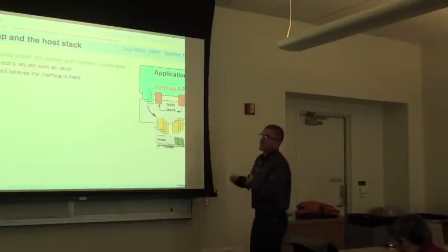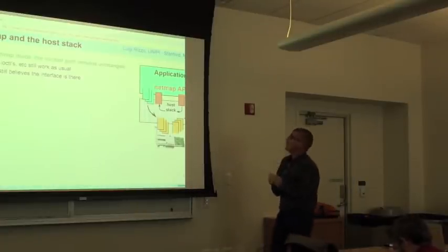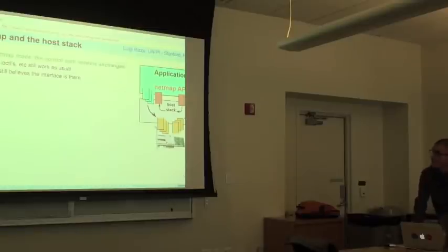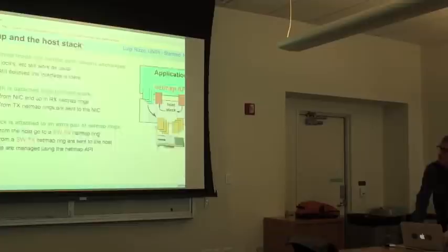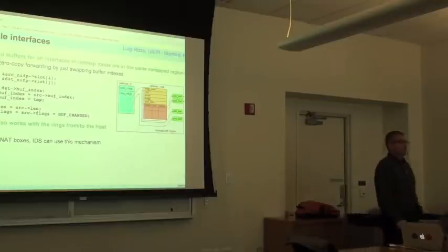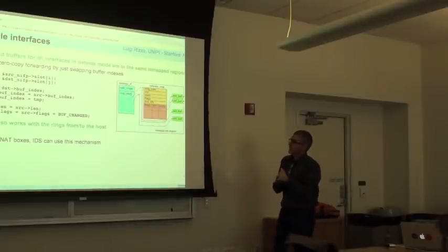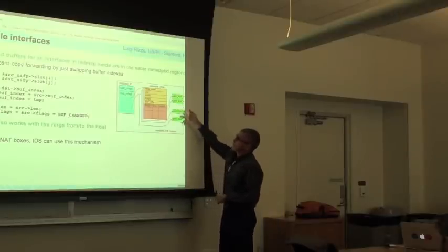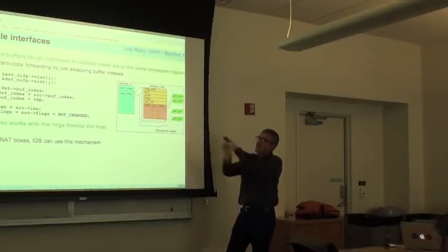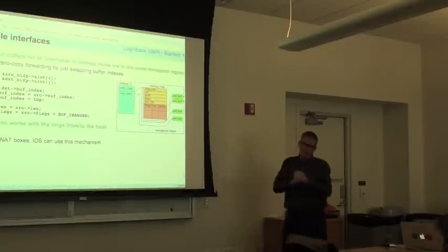So from the OS point of view, the card is there and able to send and receive packets. Whenever the OS wants to send packets, they end up in a host-side queue. The NetMap application can bring packets from there and forward them to the card. In the other direction, packets from the card can be injected into the host queue and go up the stack. This lets you implement a fast firewall, traffic shaper, or scheduler without changing your applications.